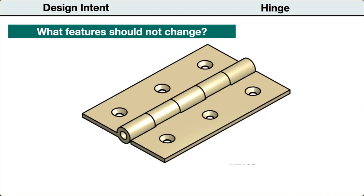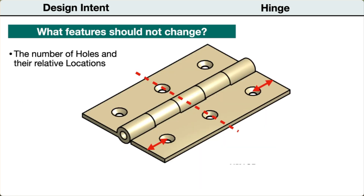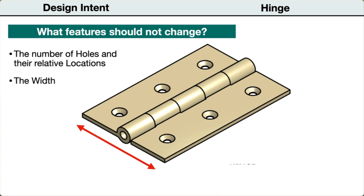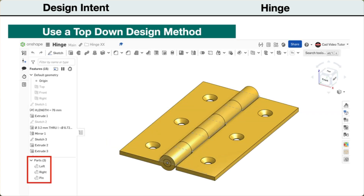Next, we can identify what parameters should remain unchanged. We want the screw holes to remain in their current locations, relative to the center and the ends. We want the width to remain unchanged. To establish and maintain the relationships between multiple features and parts, we will use a top-down design method.